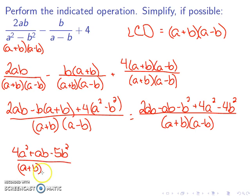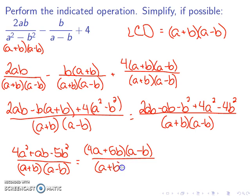Over (a + b)(a - b), and this actually factors into (4a + 5b)(a - b) over (a + b)(a - b). Now you'll see that they both have this (a - b), so my final answer is (4a + 5b) over (a + b).